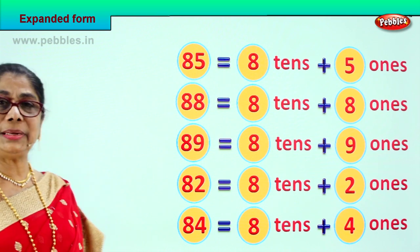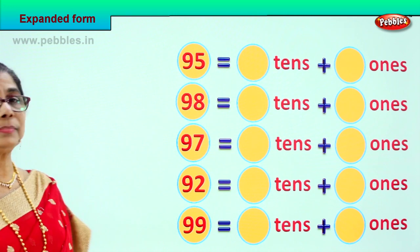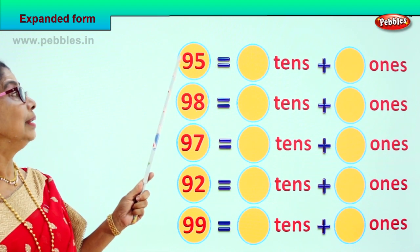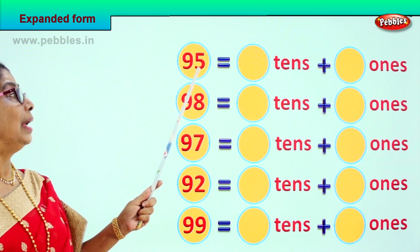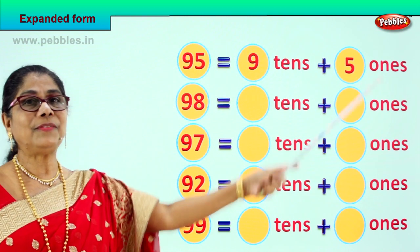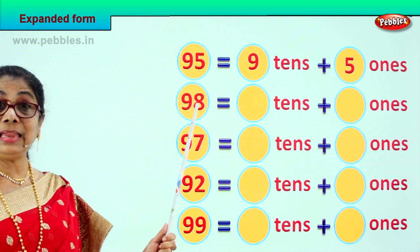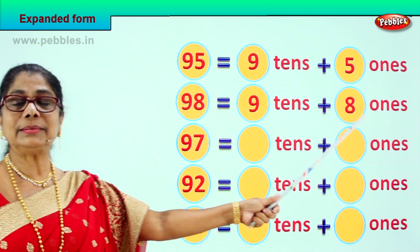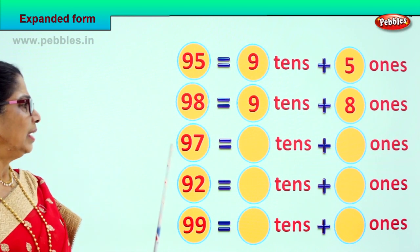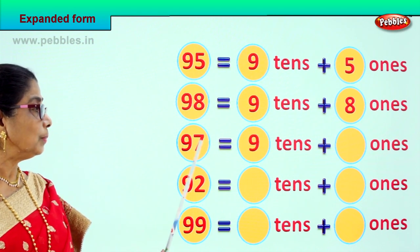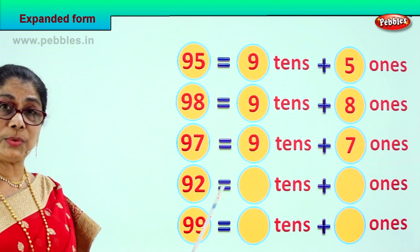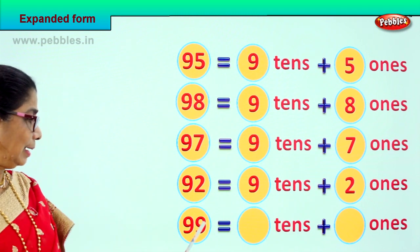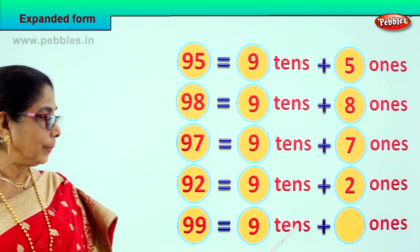Let's take another set of numbers. Look — 95. We have to put in tens and ones. 95 is equal to 9 tens and 5 ones. 98 is equal to 9 tens and 8 ones. 97 is equal to 9 tens plus 7 ones. 92 is equal to 9 tens plus 2 ones. 99 is equal to 9 tens plus 9 ones.